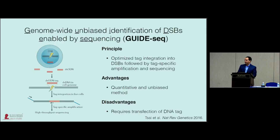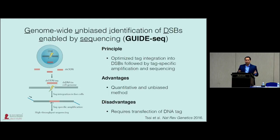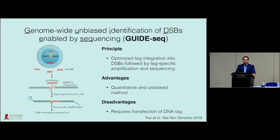The first is a cell-based method called Genome-wide Unbiased Identification of Double-Stranded Breaks Enabled by Sequencing, or GuideSeq. GuideSeq is based on the principle of optimized tag integration at the sites of nuclease-induced double-stranded breaks. We end-protect the tag to optimize its integration, capturing double-stranded breaks by non-homologous end-joining. We then perform tag-specific amplification to retrieve the genomic sequence surrounding the tag and map these areas to find double-stranded breaks. An advantage is that it's fairly quantitative and unbiased, though it does require transfection of a small DNA tag.